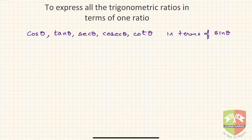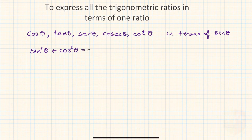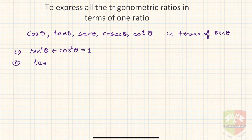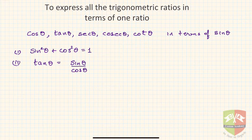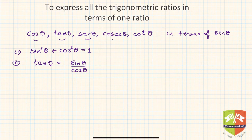We will be using the identities which we learned, that is sin squared theta plus cos squared theta is equal to 1. This is the first identity which we are going to use. We must also know that tan theta is sin upon cos, secant is 1 upon cos, cosecant is 1 upon sin, and cot is 1 upon tangent. Using these, we will be able to express all five trigonometric ratios in terms of sin theta. Let us see how.